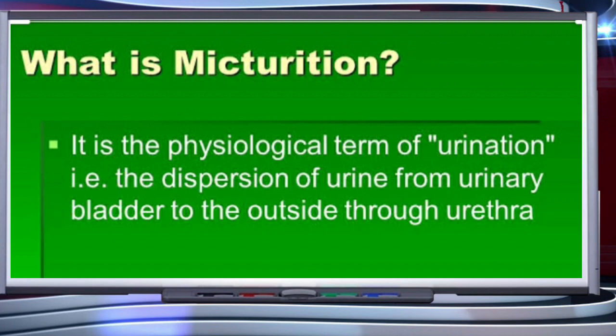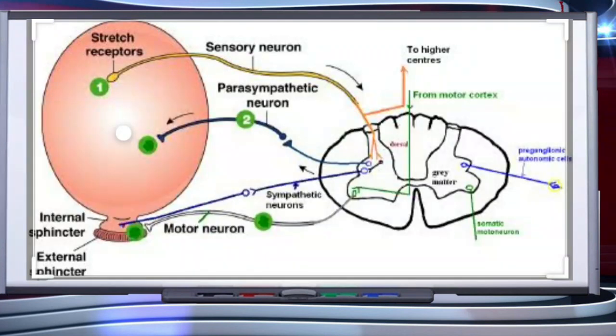Urine formed by the nephrons is ultimately carried to the urinary bladder, where it is stored until a voluntary signal is given by the central nervous system (CNS). This signal is initiated by the stretching of the urinary bladder as it gets filled with urine. In response, the stretch receptors on the walls of the bladder send signals to the central nervous system.